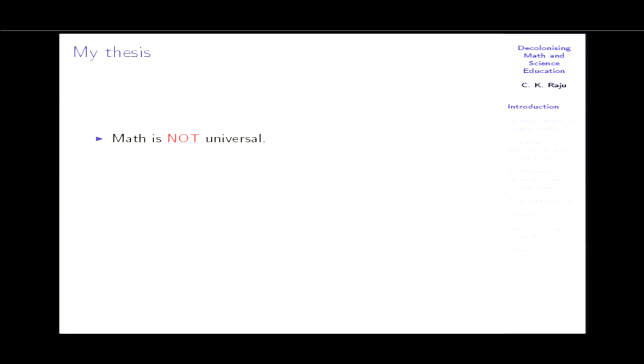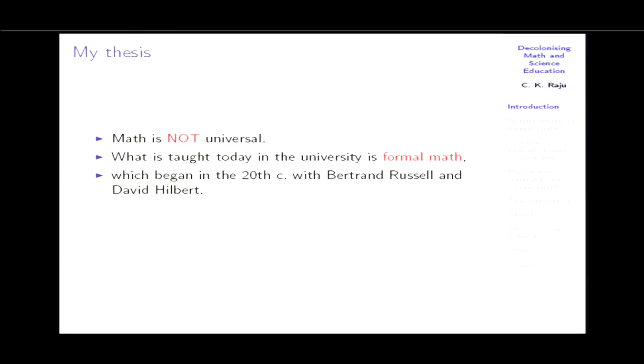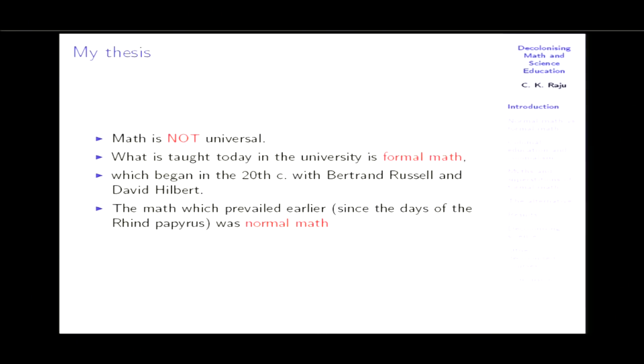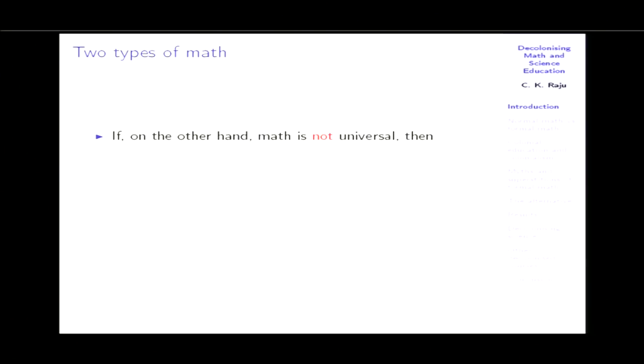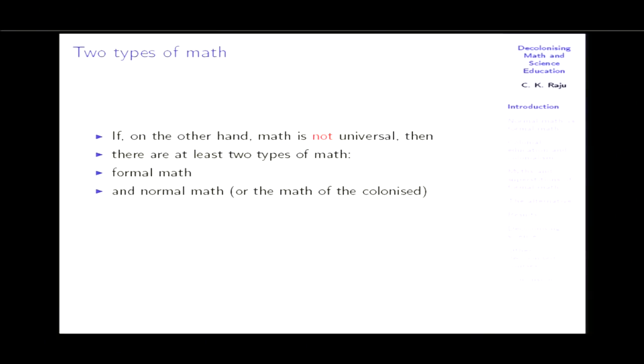What is taught today in universities is formal math, which began in the 20th century with Bertrand Russell and David Hilbert. The math that prevailed earlier for thousands of years — since the days of the Rhind papyrus — was normal math. If math is universal, we should select that universal math which prevailed for thousands of years. If it is not universal, then there should be at least two types: formal math versus normal math. Normal math is still taught in primary school. Since science uses math, once you change math you will also change science.